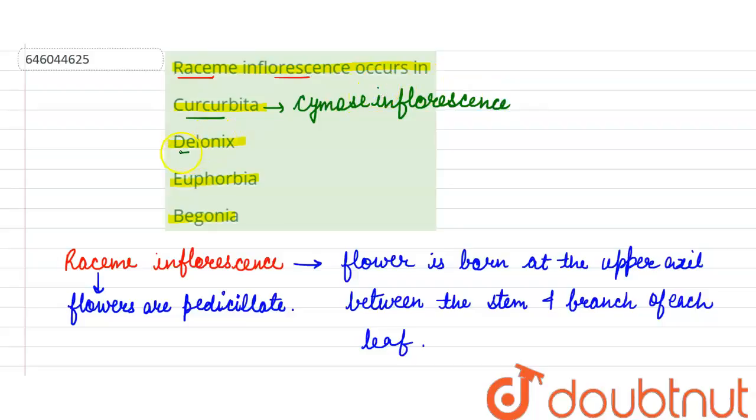Second option is Delonix. It shows raceme inflorescence which is asked in our question.